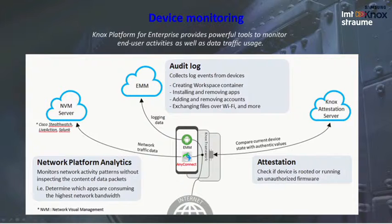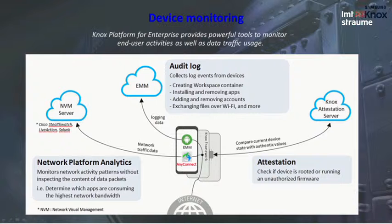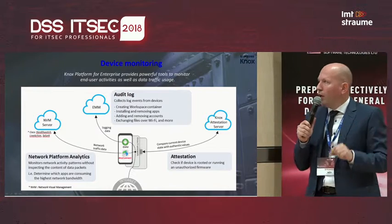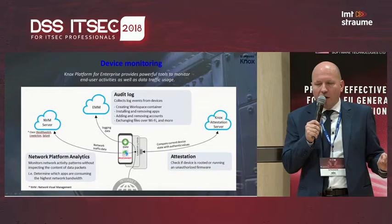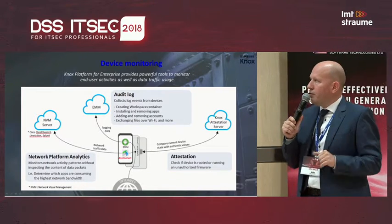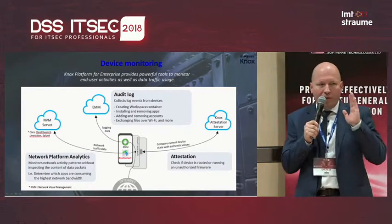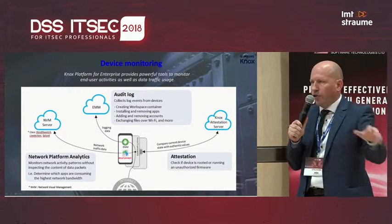IT admins should use our device monitoring tools for full control. We provide a rich set of logs, and a very useful feature is the attestation report. Via an API, the IT admin can request this report from the MDM console. The report provides firmware versions, cryptographic component versions, and which security features are on or off. This report is signed by a key residing in our hardware and can be combined with the IMEI number, so the IT admin can be 100% sure the report came from exactly that device and has not been tampered with in transit.